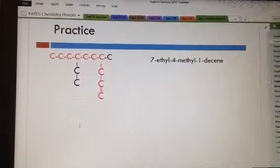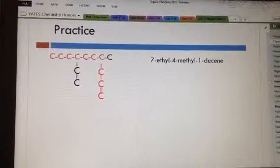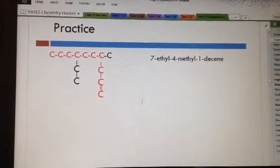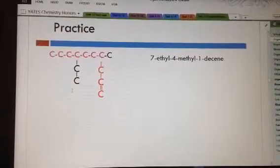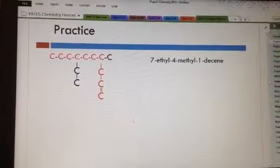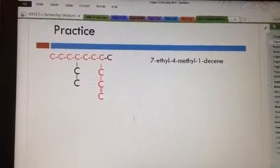How do I decide which way to name those? The same as you were told in the previous video, which is alphabetically. Since the ethyl charm comes alphabetically before the methyl charm, this would be 7-ethyl, 4-methyl, 1-decene.